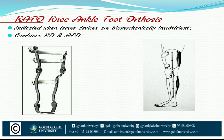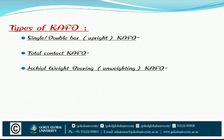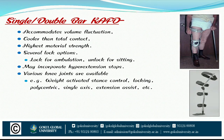Knee ankle foot orthosis (KFO) is indicated when lesser devices are biomechanically insufficient — it combines knee orthosis and AFO. Types of KFO: single or double bar uprights KFO, and total contact KFO (shell weight-bearing KFO). Single or double bar KFO accommodates volume fluctuation, is cooler than total contact, has higher material strength, and several lock options; however, it may lack ambulation unlock for sitting and comparative hyperextension stop.